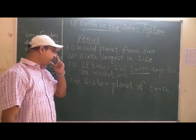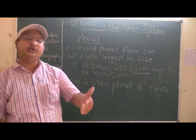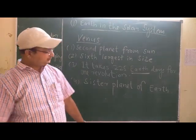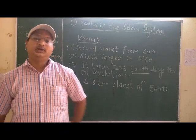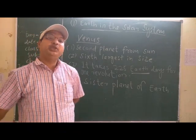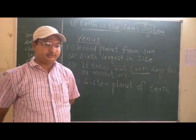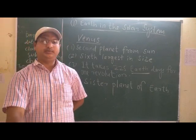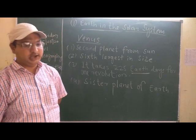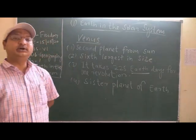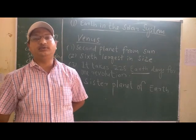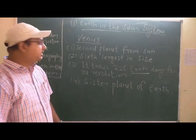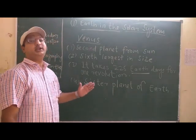The next point is that Venus is the sister planet of the Earth. The reason is that 95% of the Earth's diameter is Venus's diameter — meaning they are nearly equal in size. And 80% of the mass of the Earth equals the mass of Venus. Therefore, it is called the sister planet of the Earth. They are near about the same, and the density is also very similar.